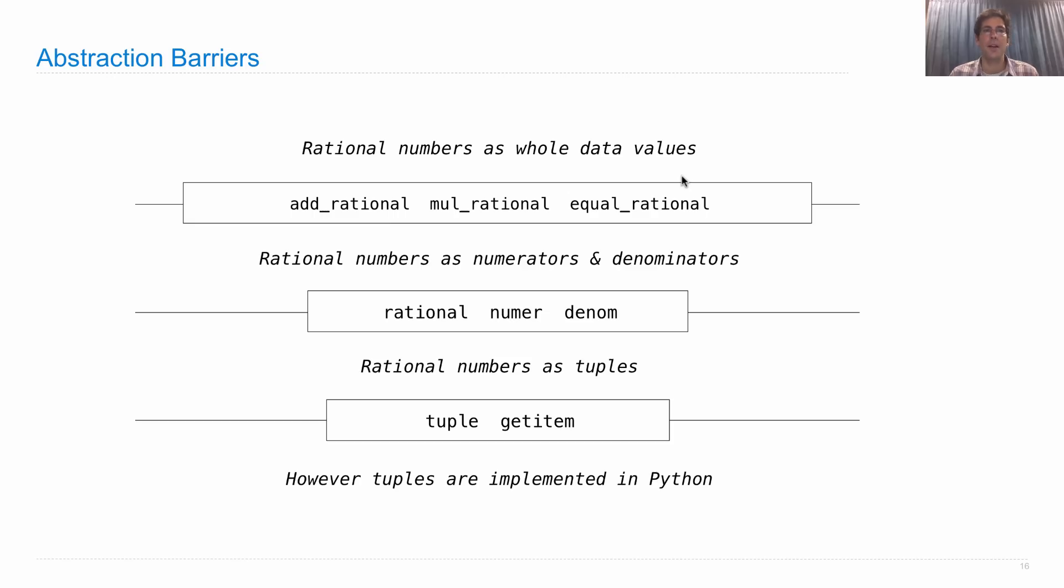Abstraction barriers separate parts of the program that have different purposes. When we think about abstract data types, we should think about introducing abstraction barriers in our program.